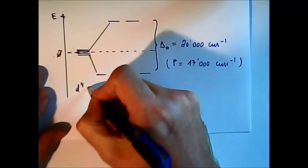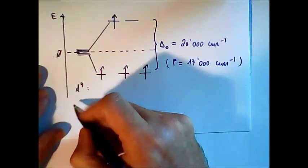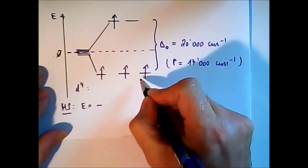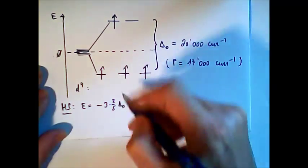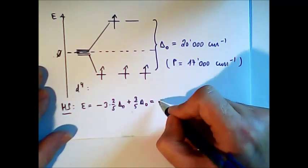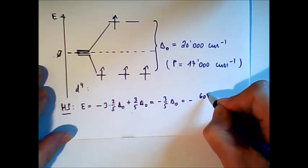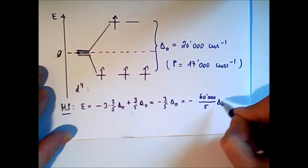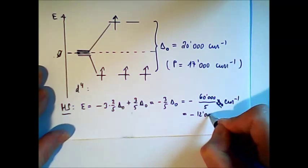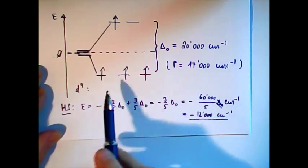In the d-4 high spin case, the four electrons are in different orbitals. The crystal field stabilization energy is minus 3 times 2 over 5 delta-O plus 3 over 5 delta-O, which equals minus 3 over 5 delta-O. Substituting 20,000 cm⁻¹ gives minus 60,000 divided by 5, which is minus 12,000 cm⁻¹. This is the stabilization energy of the high spin complex.